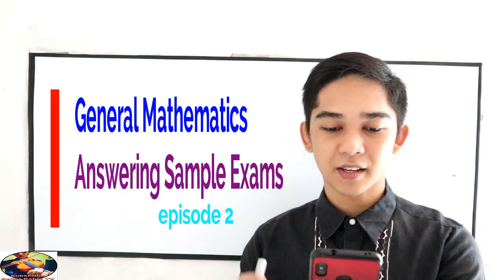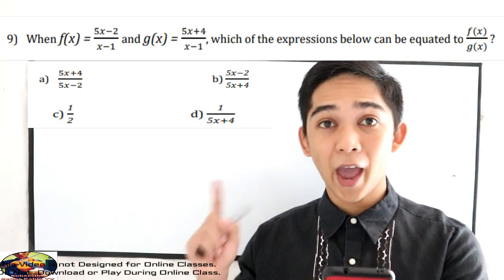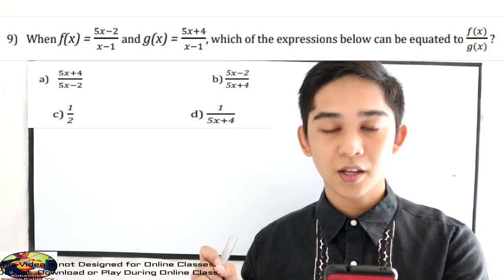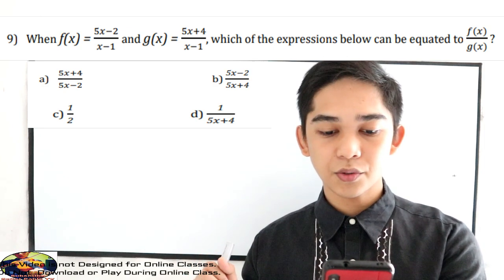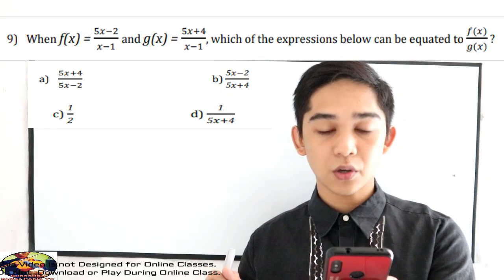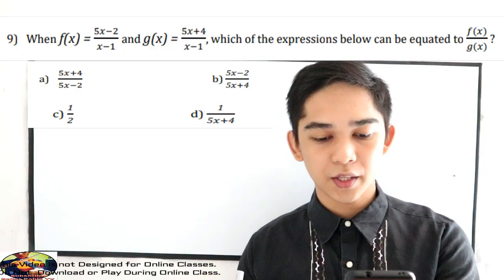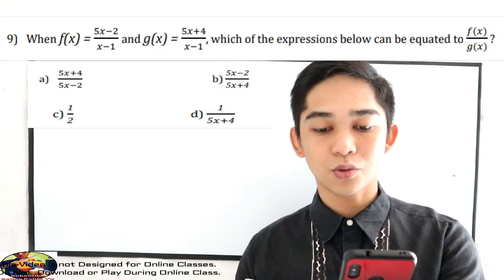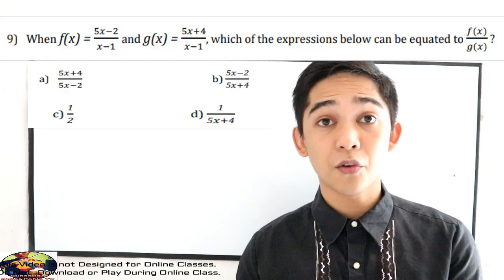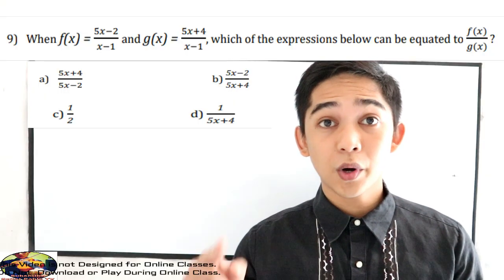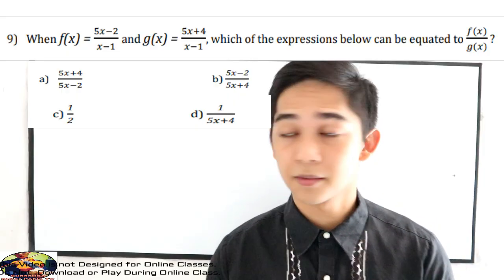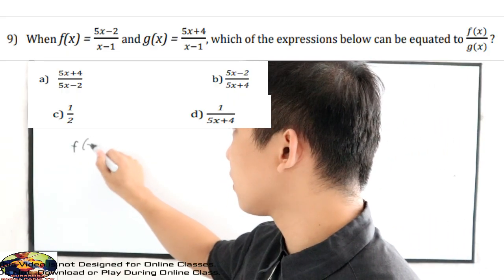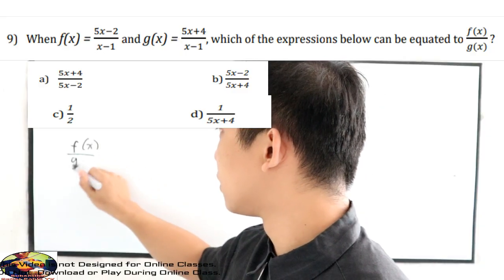The question in number 9 is: when f of x is equal to 3x over x minus 2, and g of x is equal to 5x plus 4 over x minus 1, which of the following expressions can be equated to f of x over g of x? So we are going to find and solve f of x over g of x.